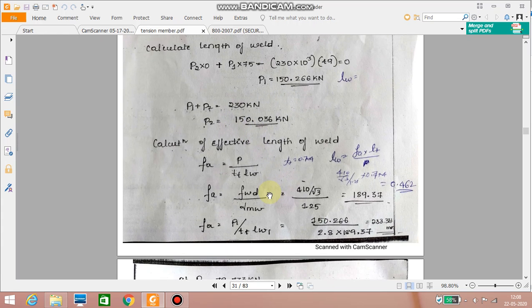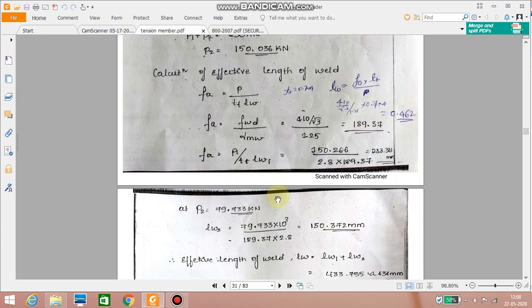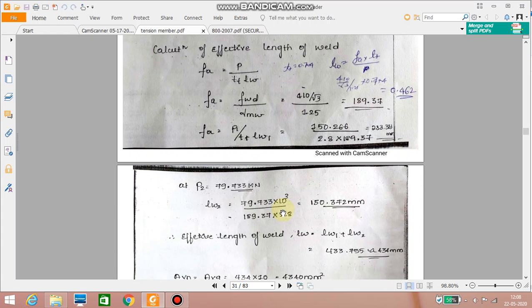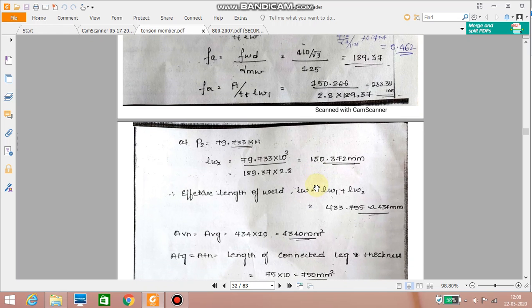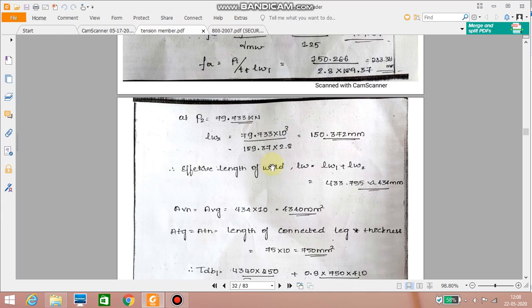So now you know how to calculate the L1 and L2. So we get the value of L1 or LW1 equal to 283.383 millimeter. So for more calculation about the calculation of the length of the weld you can refer to the video of welded connection how to calculate the length of the weld LW1 and LW2. LW2 is 150.372 millimeters. Therefore total length of the weld or effective length of the weld is LW equal to addition of these two 433.755 approximated to 434 mm.